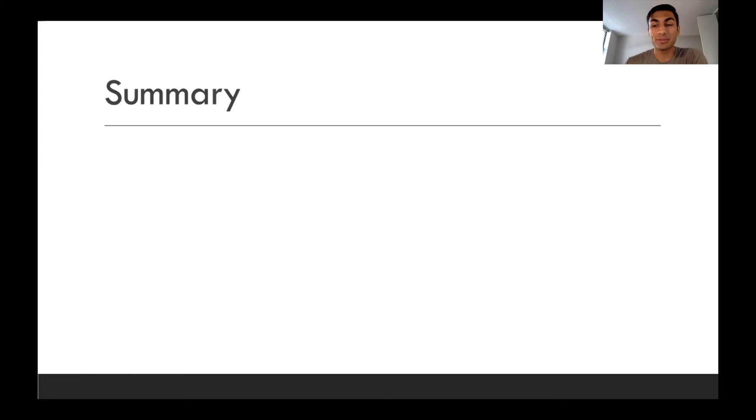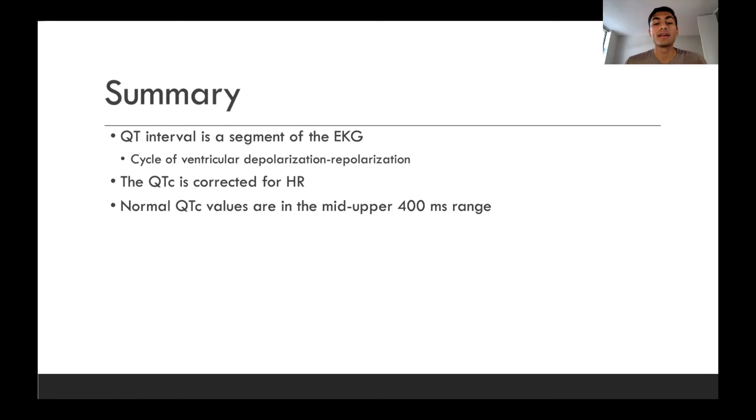Okay. So in summary, let's go over what we learned today. First of all, we learned the QT interval is a segment of the EKG, specifically representing a cycle of depolarization and repolarization of the ventricles. Next, we learned the QTC is corrected for heart rate. We learned normal QTC values are in the mid to upper 400 millisecond range. The QT interval can be lengthened by a number of factors, including electrolyte abnormalities, medications, estrogen, age, and congenitally.